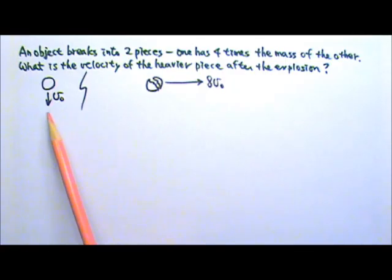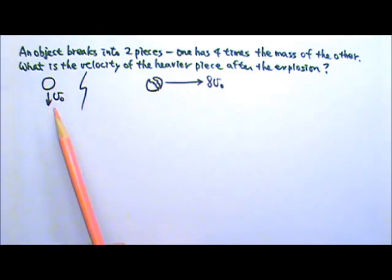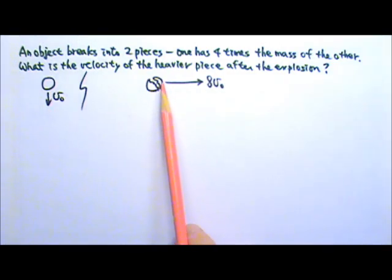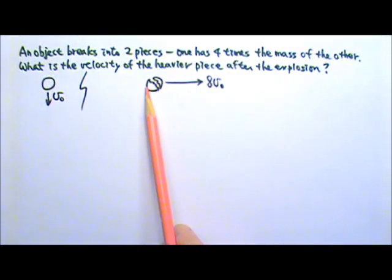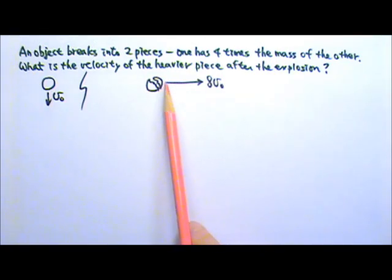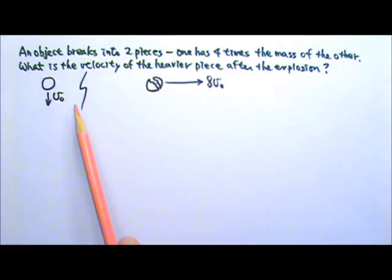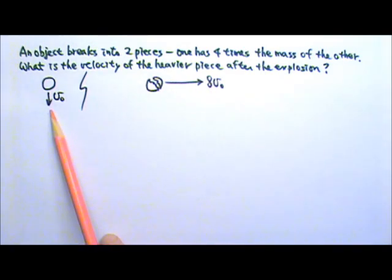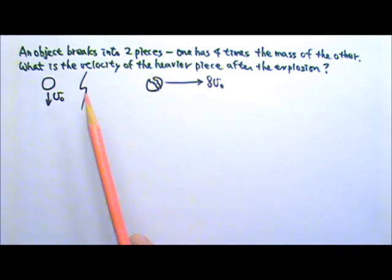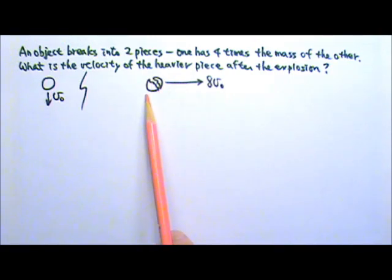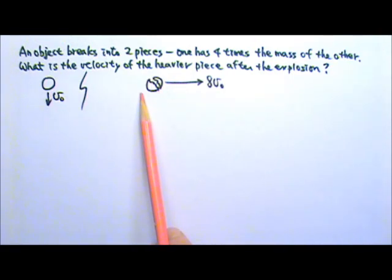An object traveling at speed V0 suddenly explodes and breaks into two pieces. One piece has four times the mass of the other. The lighter piece moves at 8V0 in a direction that is at a right angle to the object's original motion. What is the velocity of the heavier piece after the explosion?